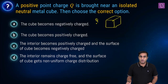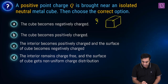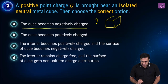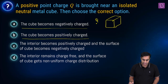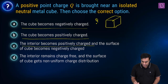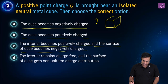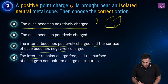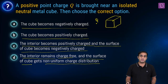We have to choose the correct option among these. First one: the cube becomes negatively charged. Second one: the cube becomes positively charged. Third one: the interior becomes positively charged and the surface of the cube becomes negatively charged. Last one: the interior remains charge free and the surface of the cube gets non-uniform charge distribution.